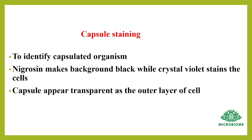Next, capsule staining, used to identify capsulated organisms. Nigrosin makes the background black, while crystal violet stains the cell. The capsule appears transparent as the outer layer of the cell.